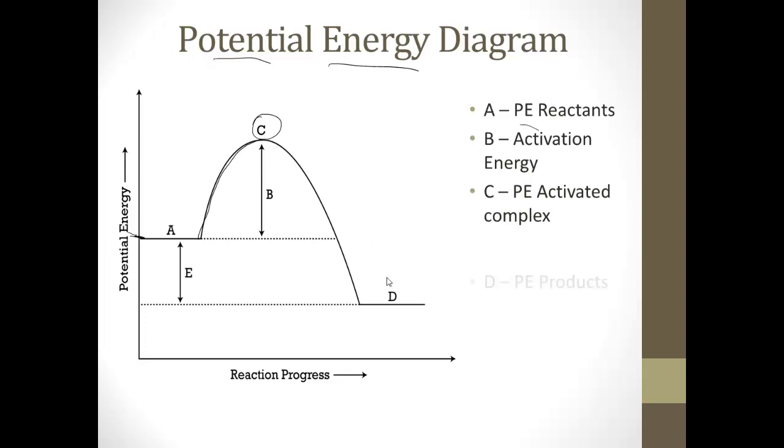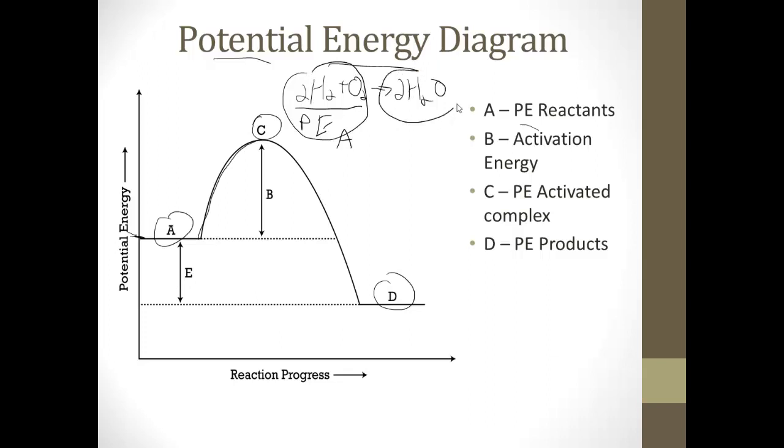And finally, or not quite finally, D down here is the potential energy of the products. So let's say we look at our classic reaction, 2H2 plus O2 yields 2H2O. Here A would be the potential energy of our reactants here. D would be the potential energy of the products. B would be some sort of energy that we have to initially put in. And C would be the potential energy of this activated complex that takes place before we actually have our H2O.